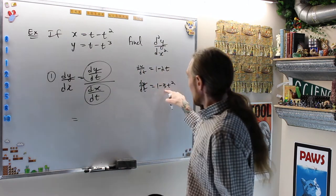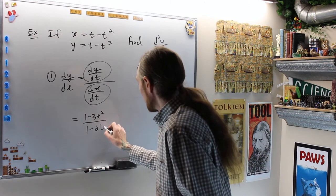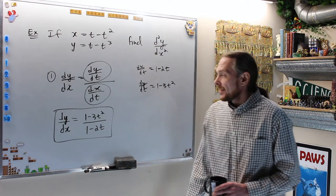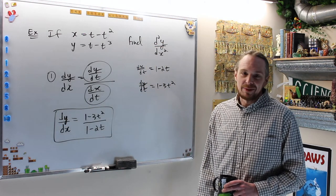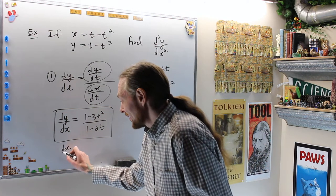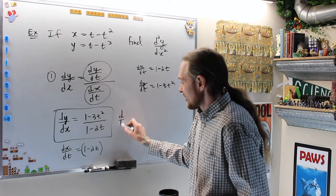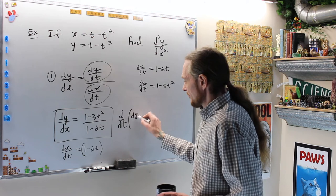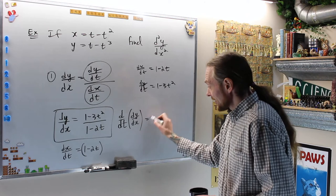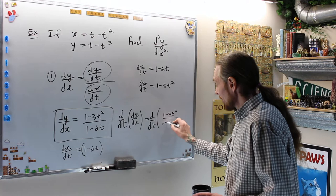Therefore, this is this one, 1 minus 3t² over 1 minus 2t. This is dy/dx. Now we have to take the derivative of that, you see. What else do I need? I need dx/dt, and I need the derivative of this.